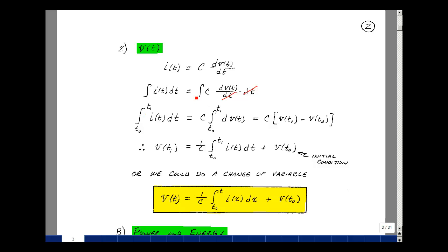We can pull out C here. It's just a constant. And so we've got the integral of 1 dV of T. That's just simply the upper limit minus the lower limit evaluated in our function V of T. And now I can solve for the voltage across the capacitance at some time T1 in the future. So divide by C over here.